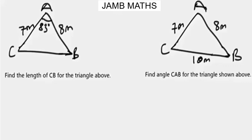The second condition in which the cosine rule will be applied is when all three sides of the triangle are given but no angles are given. So we have three sides of this triangle given but there is no angle given. When you have this kind of situation, you apply the cosine rule.